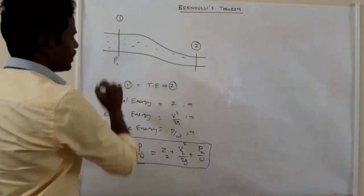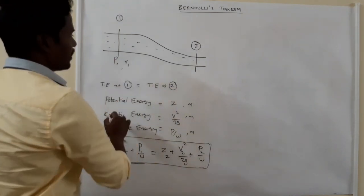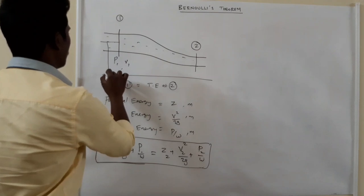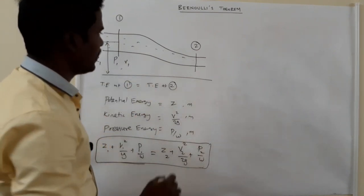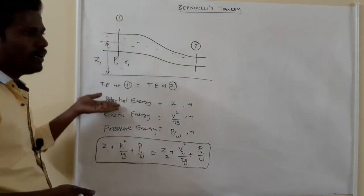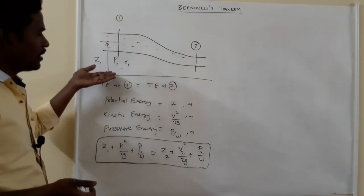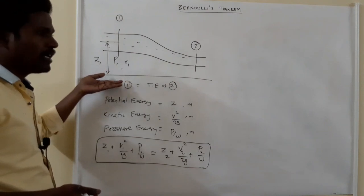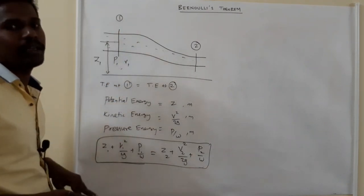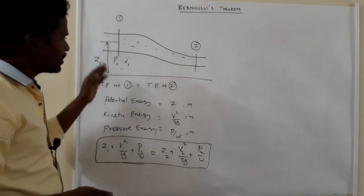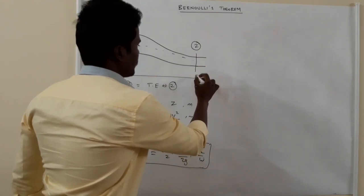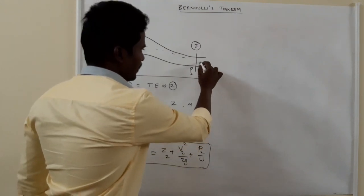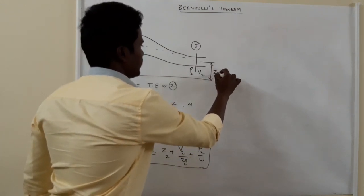At point 1, the pressure is P1, velocity is V1, and the datum — which is the potential energy — is Z1. Okay, so potential energy of any object depends on its height, so Z1 is the potential energy. At point 2, pressure is P2, velocity is V2, and potential energy is Z2.